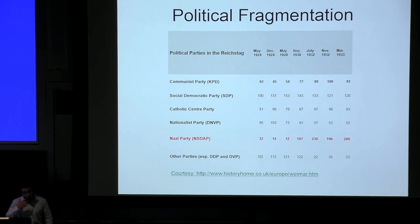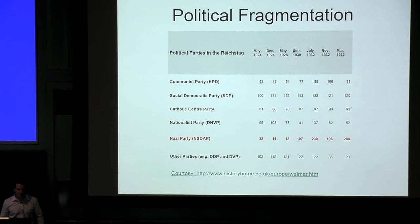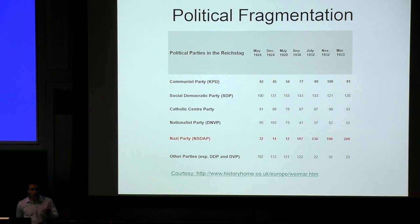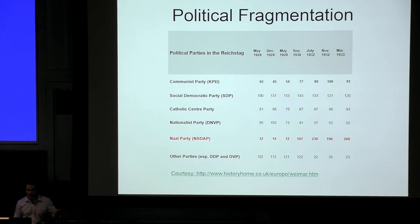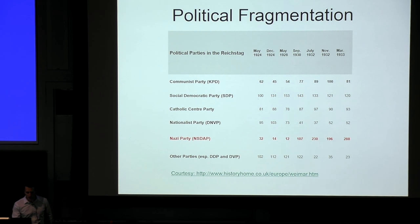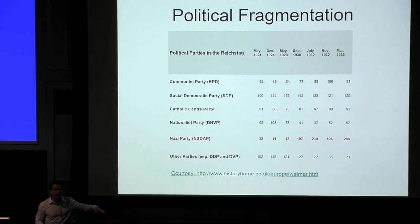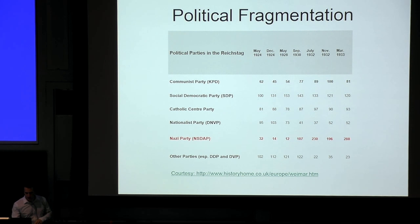The background is political fragmentation — many different parties vying for power. Among those getting seats in the Reichstag, the parliament, were the Communist Party, the Social Democrats, the Catholic Center Party, the Nationalist Party (which allied with the Nazis), and various democratic parties that steadily lost power. The German Democratic Party had 102 seats in 1924 but only 22 by 1932 — a real decline. Meanwhile, Nazi seats increased dramatically, really only after the 1930s. They didn't have much power in the 1920s, which is remarkable given how quickly they rose.